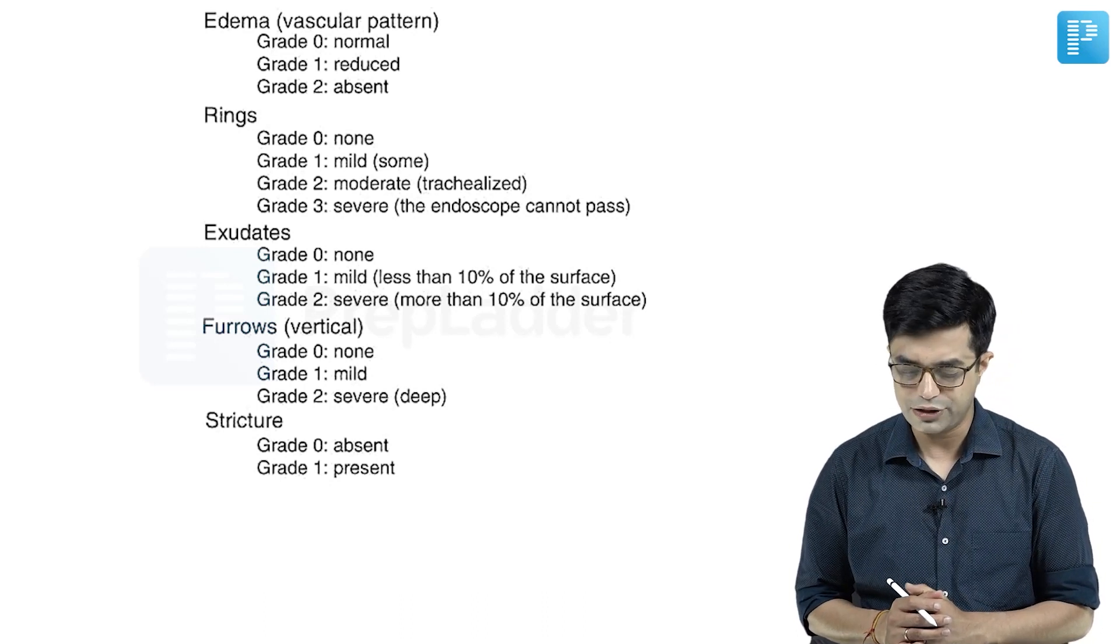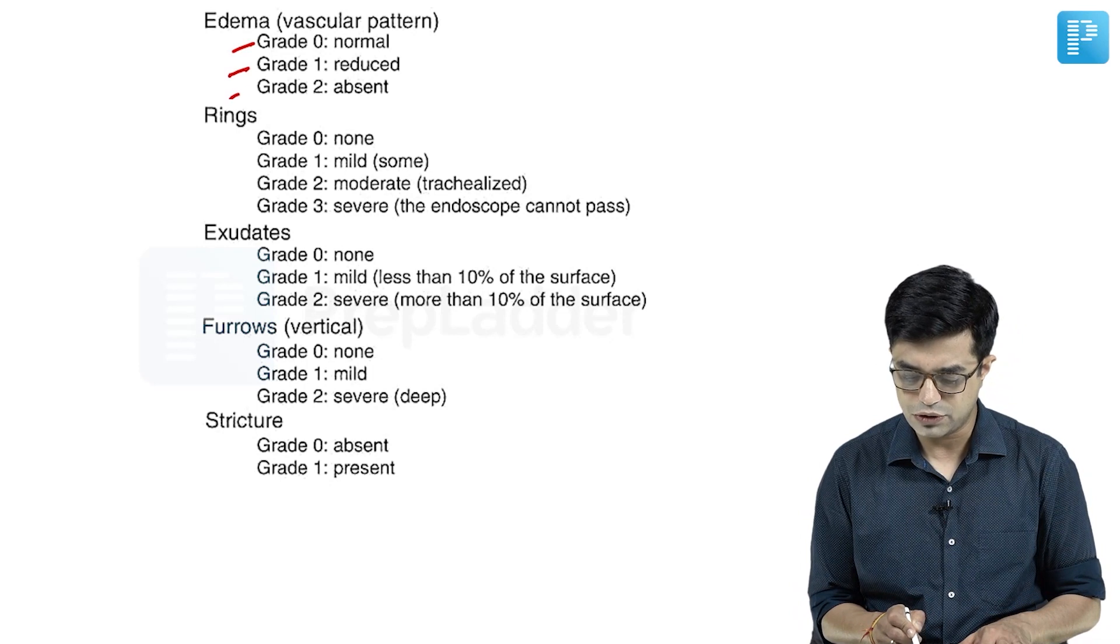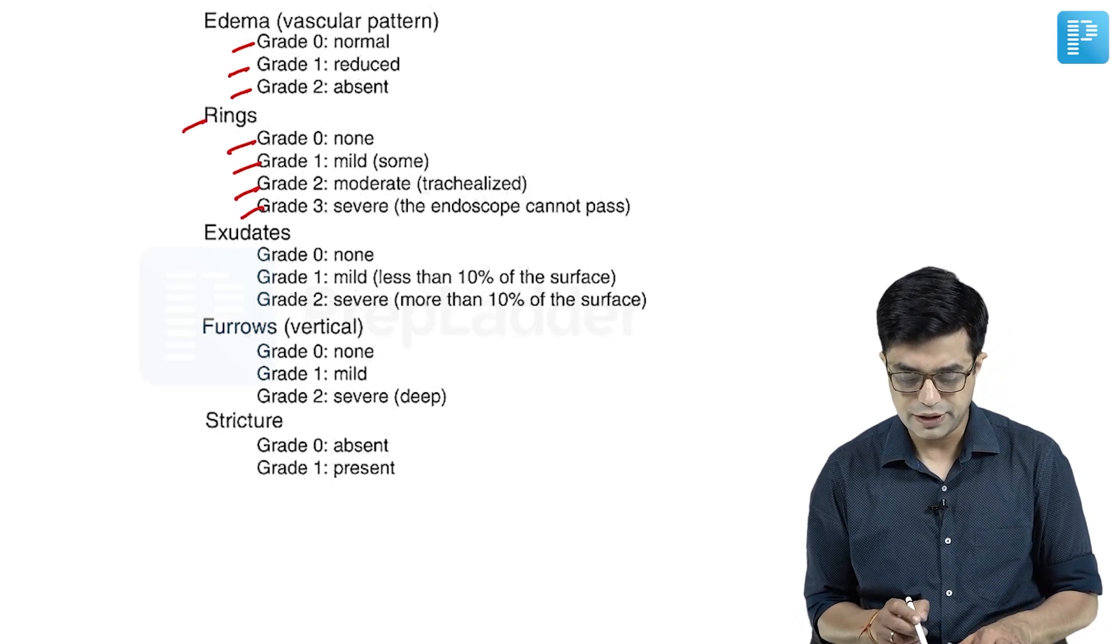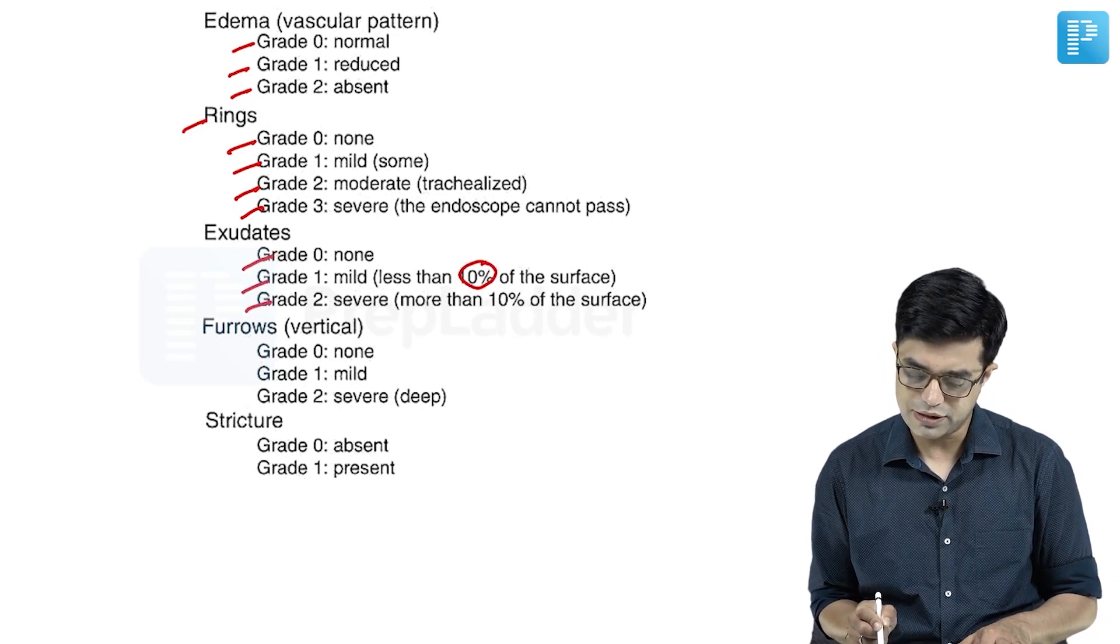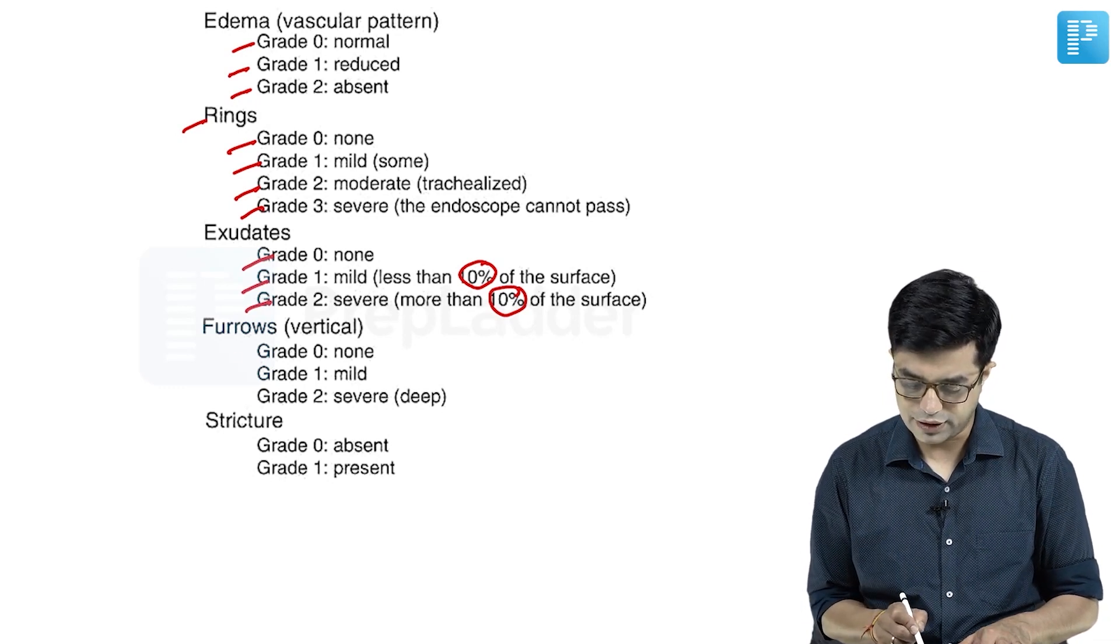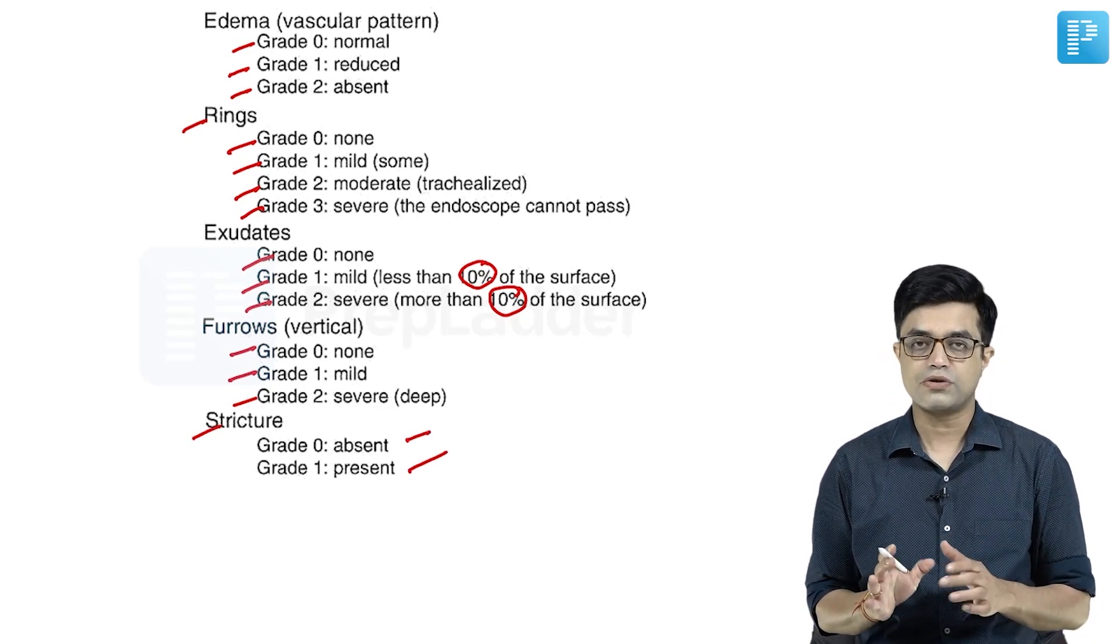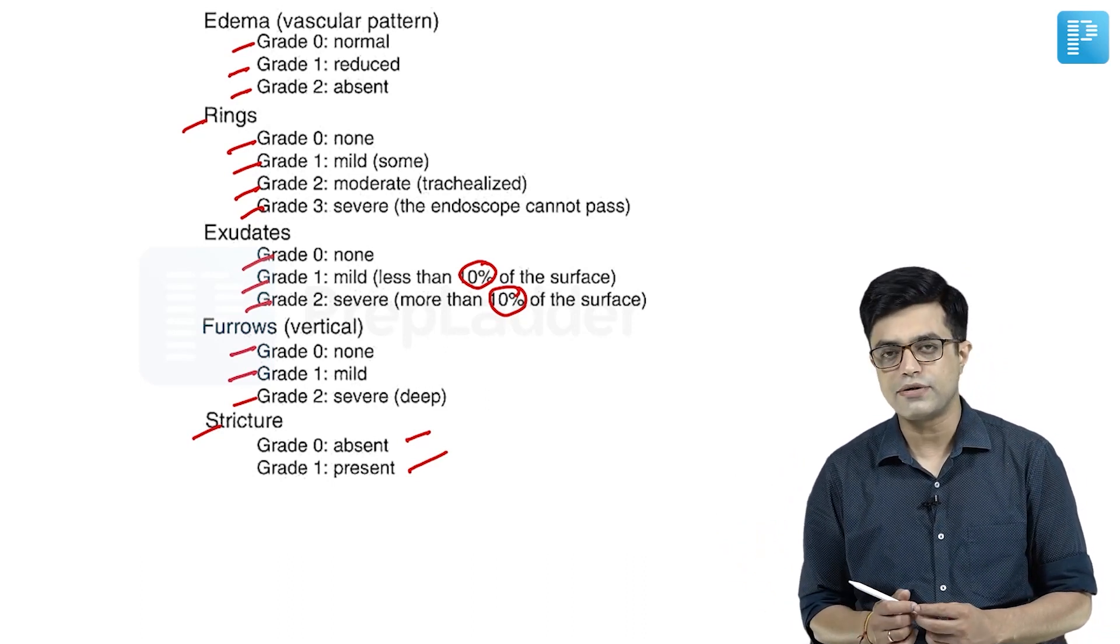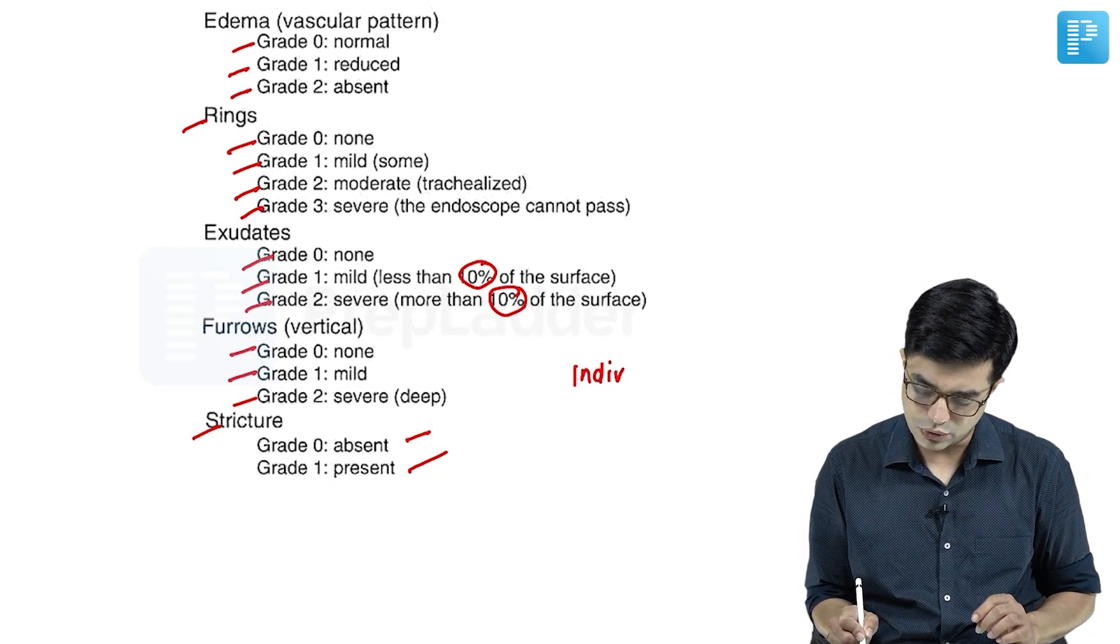Edema has three grades: 0 is normal, 1 reduced, 2 absent. Rings show none, mild, moderate, severe. Exudates show none, mild, severe based on surface area. Furrows are none, mild, or severe. Strictures are absent or present. Individual component scores can be calculated.